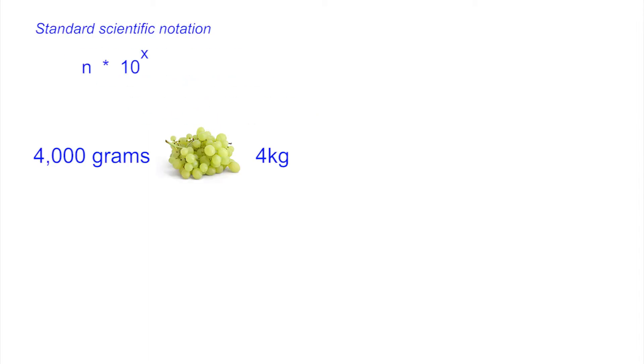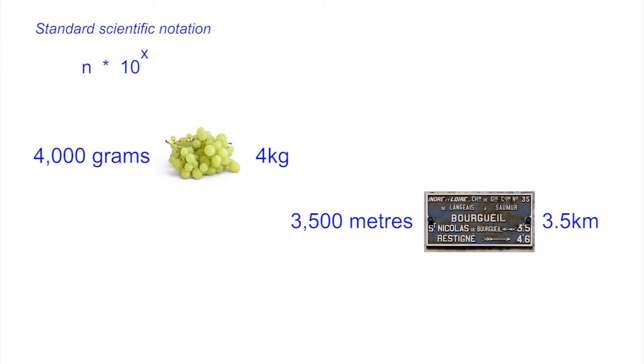You don't buy 4,000 grams of grapes. You buy 4 kilograms of grapes, and you walk 3.5 kilometers, not 3,500 meters. The K is a prefix for kilo. That means thousand, or 1 times 10 to the 3.